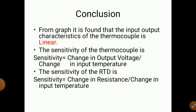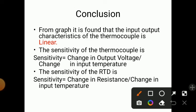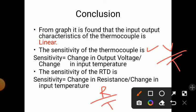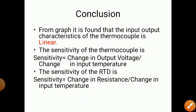From this experiment, the conclusion is: from the graph it is found that the input-output characteristics of the thermocouple are linear. Sensitivity of thermocouple = change in output voltage ÷ change in input temperature, found from the graph. Sensitivity of RTD = change in resistance ÷ change in temperature. This is how you complete the experiment.